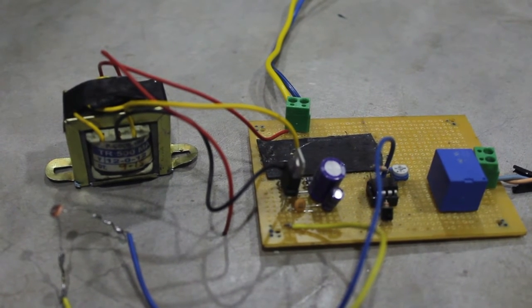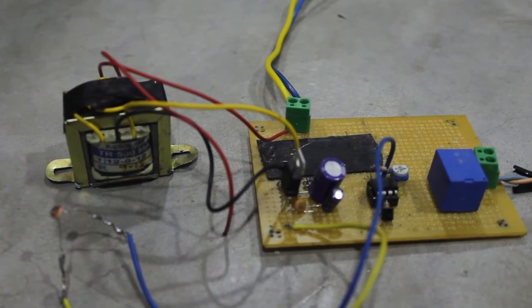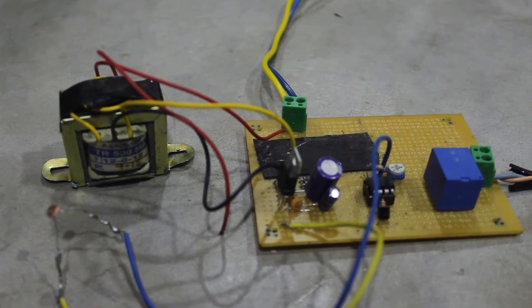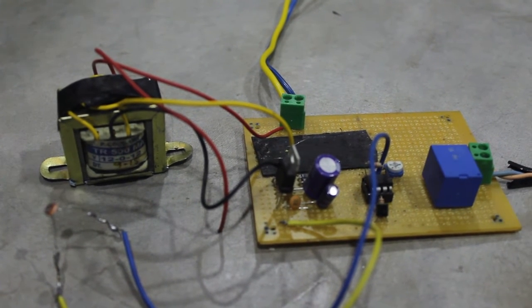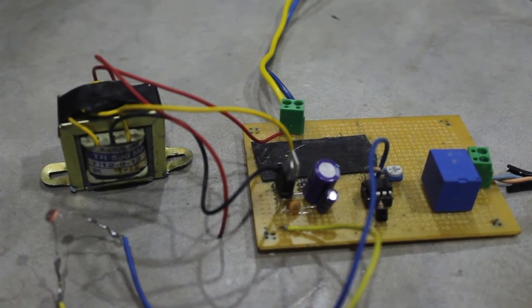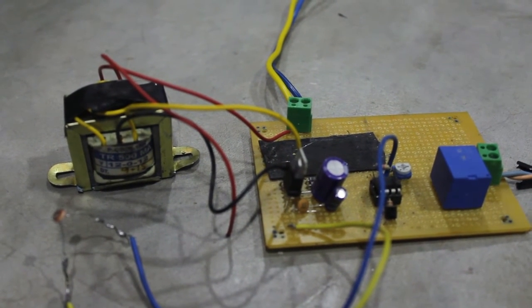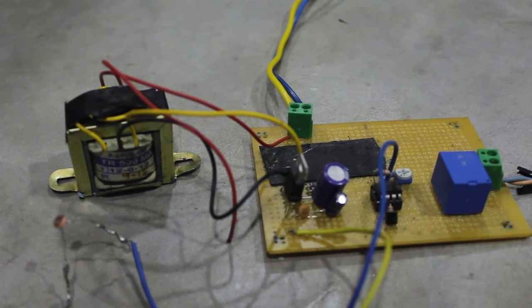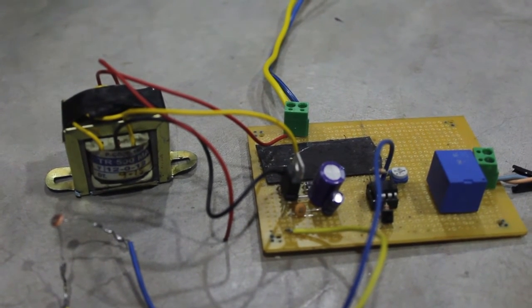Initially when the light does not fall on the LDR, the resistance will be low, so the output of the op-amp will be low. When the light falls on the LDR, the resistance will gradually increase, so that the output of the op-amp will get high.